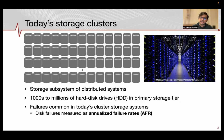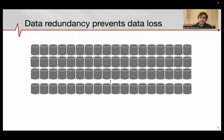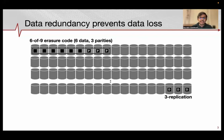Disk failures are typically measured in terms of annualized failure rate, or AFR, which is the expected percentage of disk failures in a given year. To protect against data loss in the face of disk failures, the commonly employed technique is data redundancy — such as three-way replication, which is three copies of the data, or a 6-of-9 erasure code, which has six data chunks and three parities.